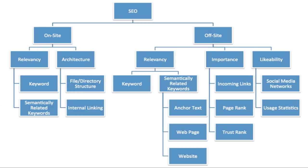When working on on-site SEO, make sure you're mainly focusing on these two subcategories: relevancy and architecture. We want each individual page to be relevant for a particular key term, and you also want semantically related keywords on the same page. You also want an architecture that makes sense and internal linking set up so that you're passing page rank to your main pages or the pages you'd like to rank high in the search engines.